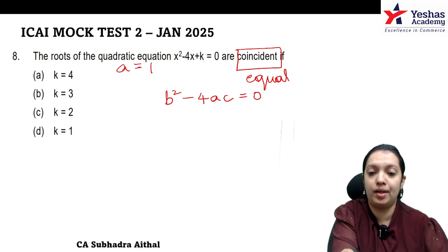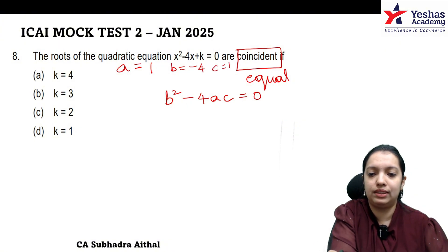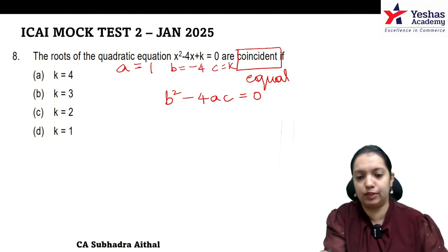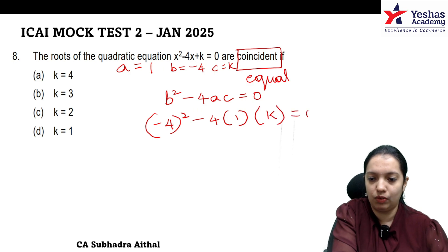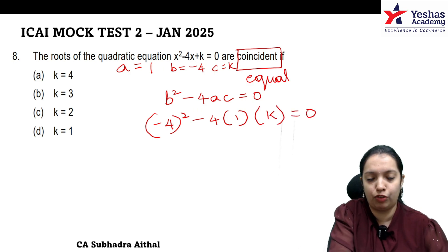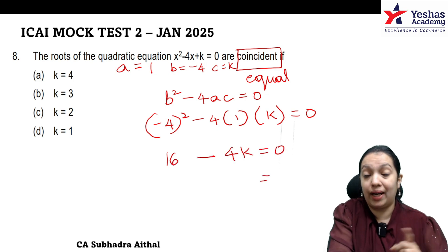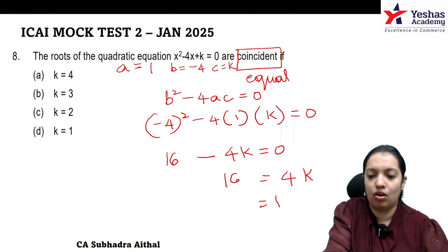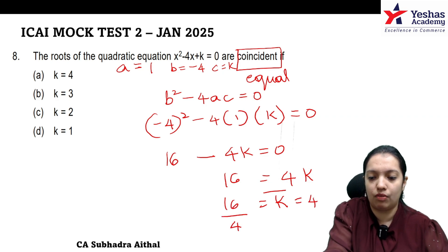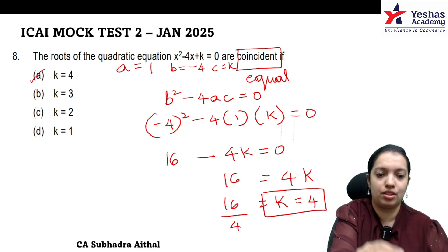For this equation: a = 1, b = -4, c = k. Replacing these values: b² - 4ac = (-4)² - 4(1)(k) = 0, which gives 16 - 4k = 0, so 4k = 16, and k = 4. The correct option is option A.